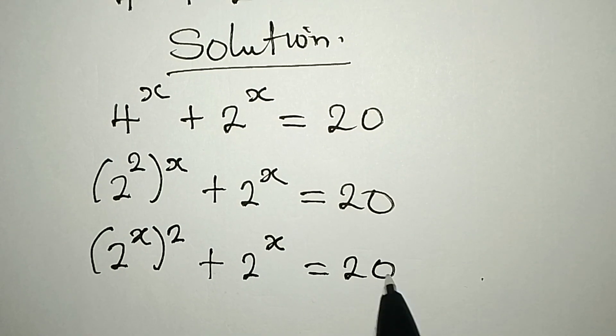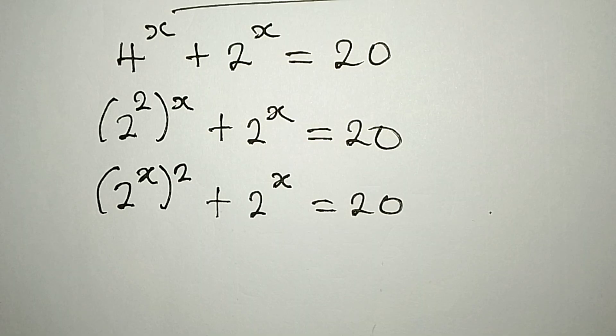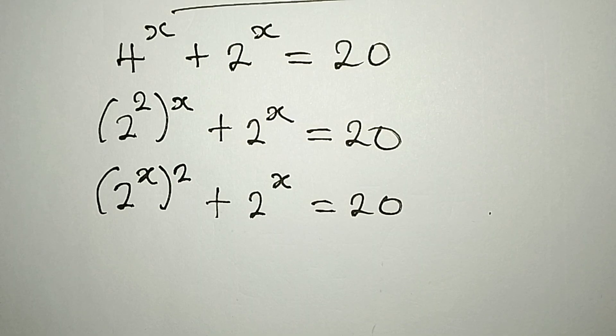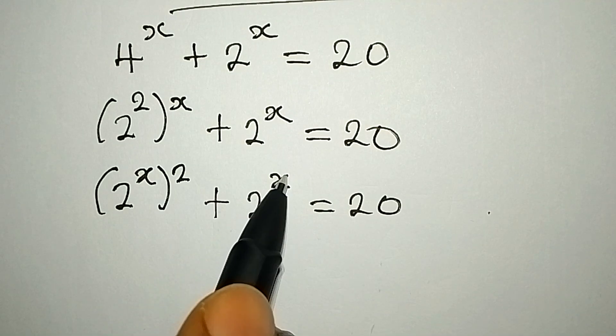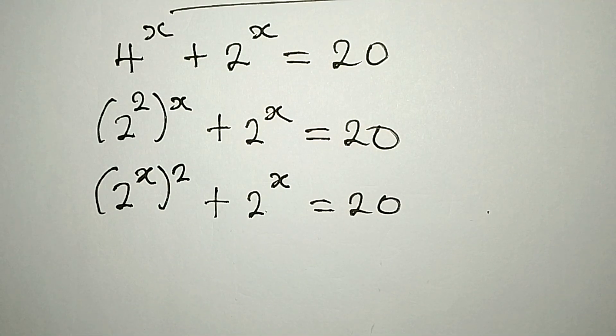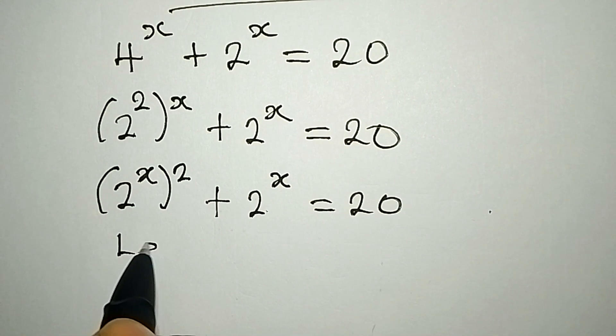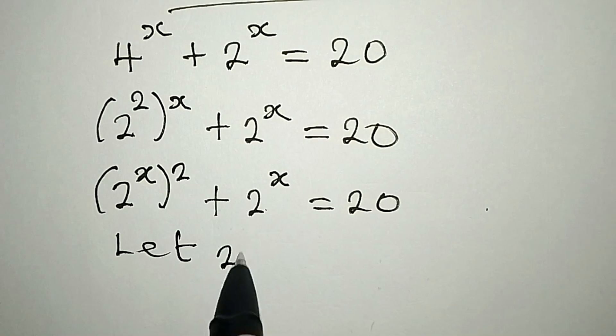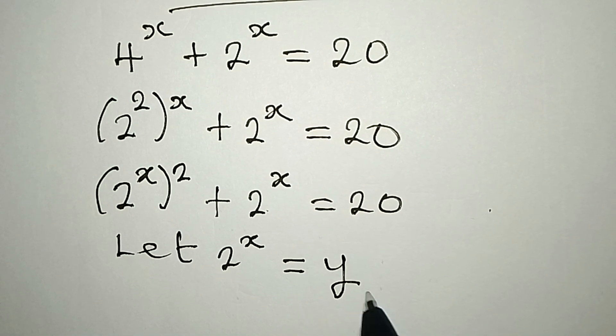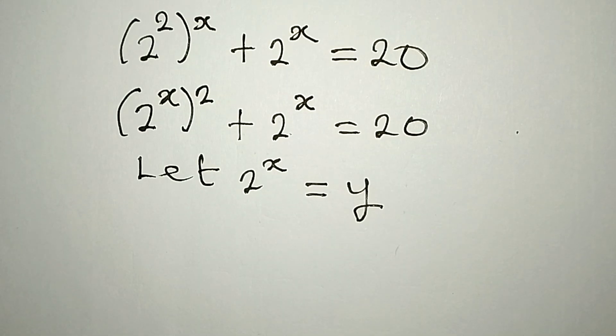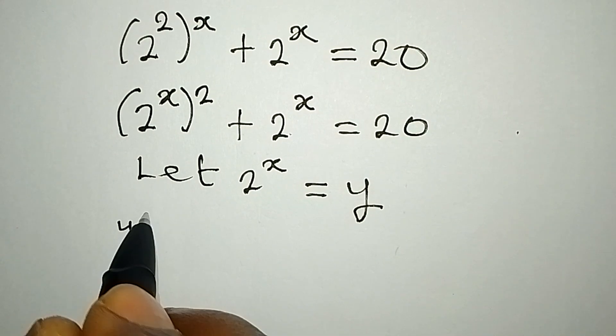The reason I did this is for me to have 2 to the power of x in two places. So we can simply say let 2 to the power of x be equal to y. And if that is the case, we'll be having y squared.